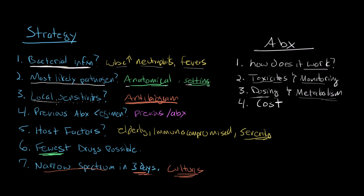Once you're familiar with your local sensitivities and know your likely pathogen based on anatomical site, the next step is to inquire about your specific patient. Step four: have they been on previous antibiotics? Previous antibiotic history is important because if they've been on antibiotics before, you want to avoid using those same ones — the patient may harbor a resistant pathogen. If they've had previous blood cultures or cultures of any kind, that can help you target your antibiotic choice based on known resistance and sensitivity patterns.